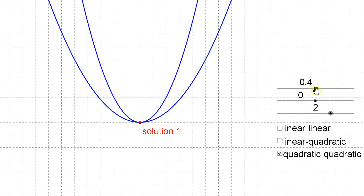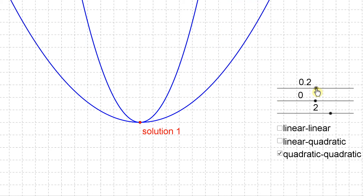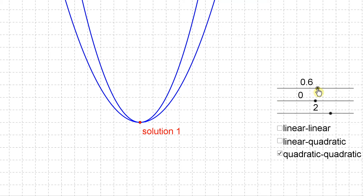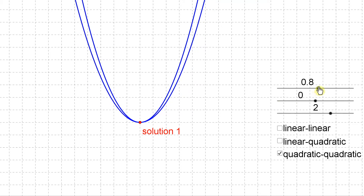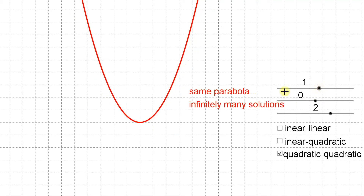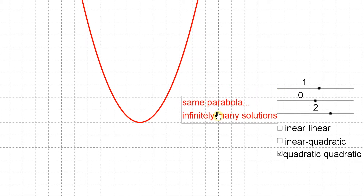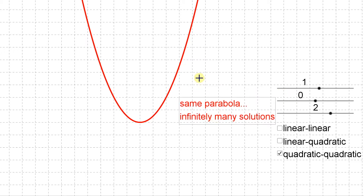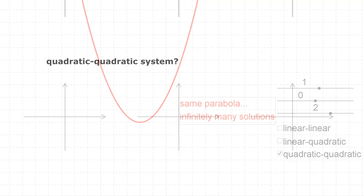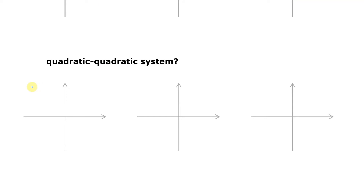There's also a special case, just like for a linear-linear system, where your two parabolas are actually the same parabola. In that case you'd have infinitely many solutions, just like for a line. So there are really four possibilities for a quadratic-quadratic system: zero, one, two, or infinitely many.